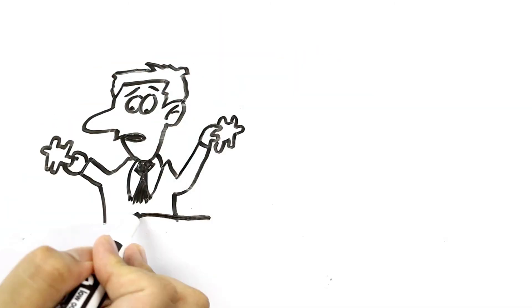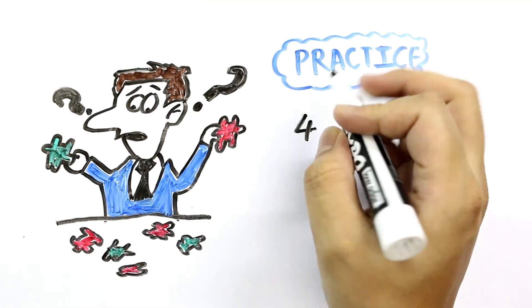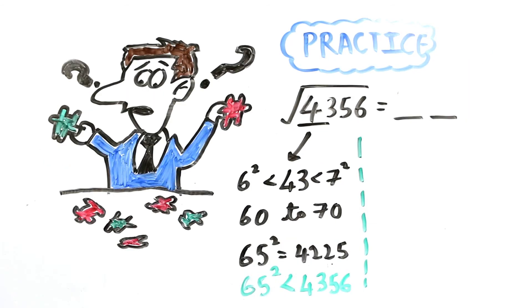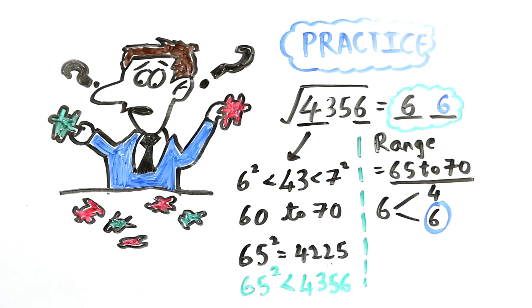It might seem a little complicated in the beginning, but once you practice 3-4 times, you can find square root of any perfect square in few seconds with this trick.